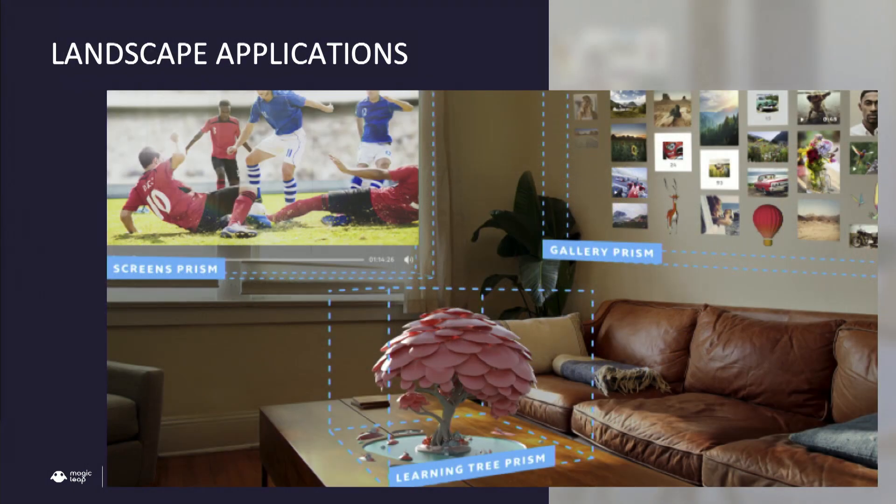With landscape, you have all these multiple apps running simultaneously. In this slide, you can see that we have a screens app running behind our gallery with all these textures, images, 3D models, and then another 3D app running on your coffee table.